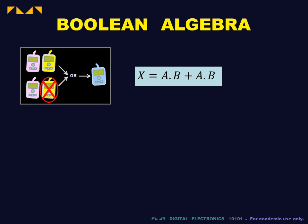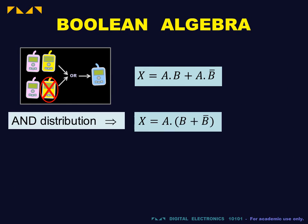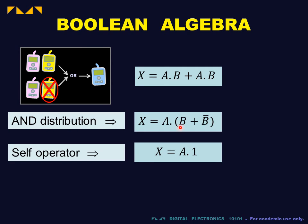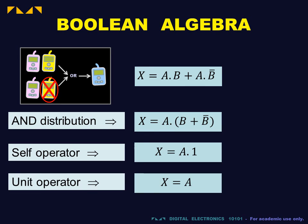This expression can be simplified by the following steps. First, we use AND distribution to extract the common factor A. Second, we reduce B OR B-bar. Finally, we apply the unit operator.